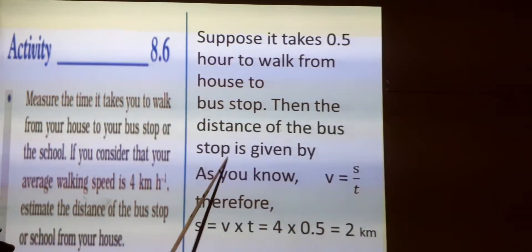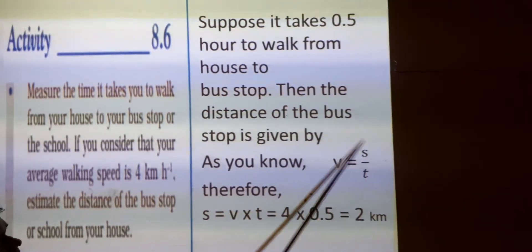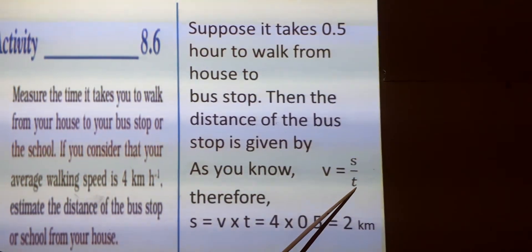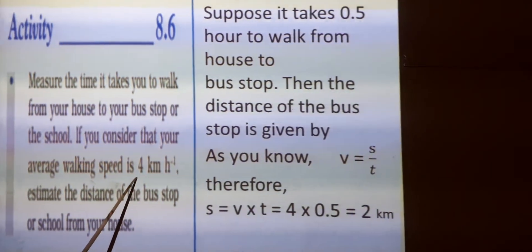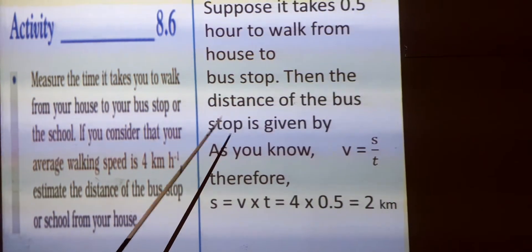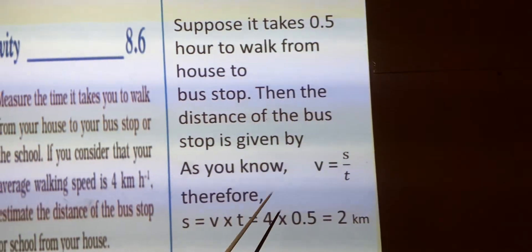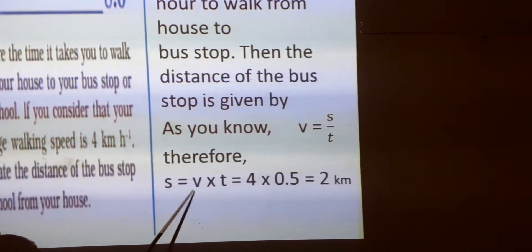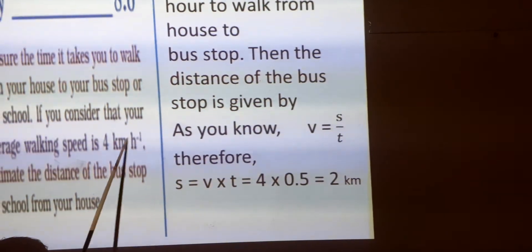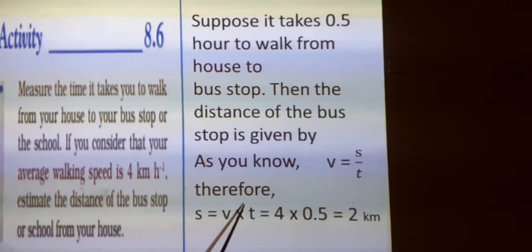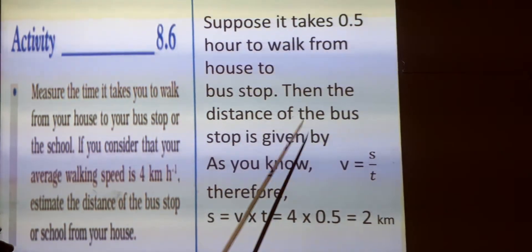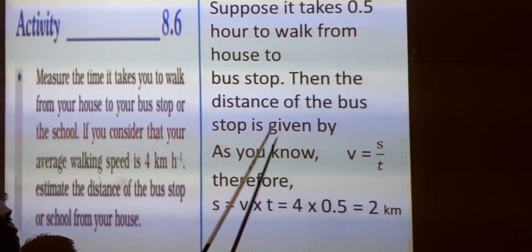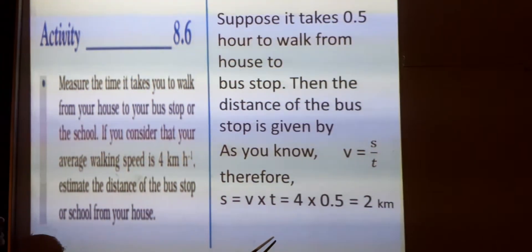The distance of the bus stop from this school will be given by the formula: speed V equals distance S divided by time T. The average walking speed is given as V = 4 km per hour, and the estimated time is 0.5 hour. So S equals V multiplied by T, which gives S = 4 km/h × 0.5 h = 2.0 km. So the bus stop from our school is approximately 2 km.